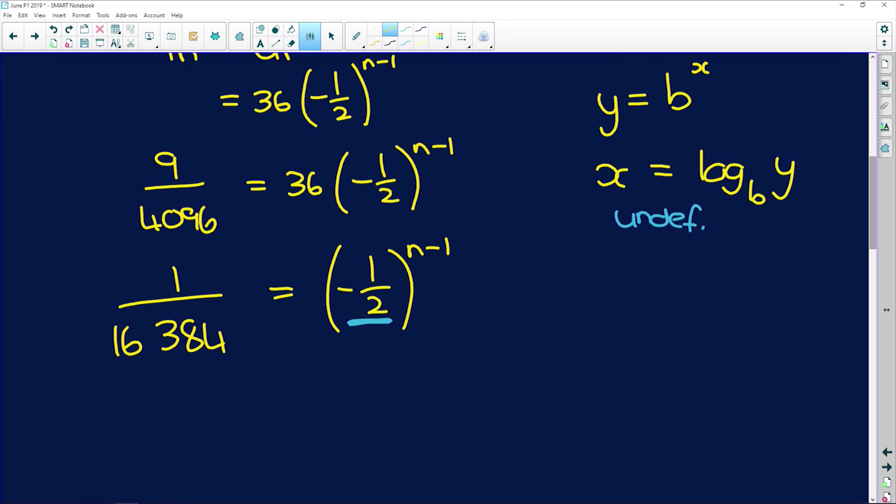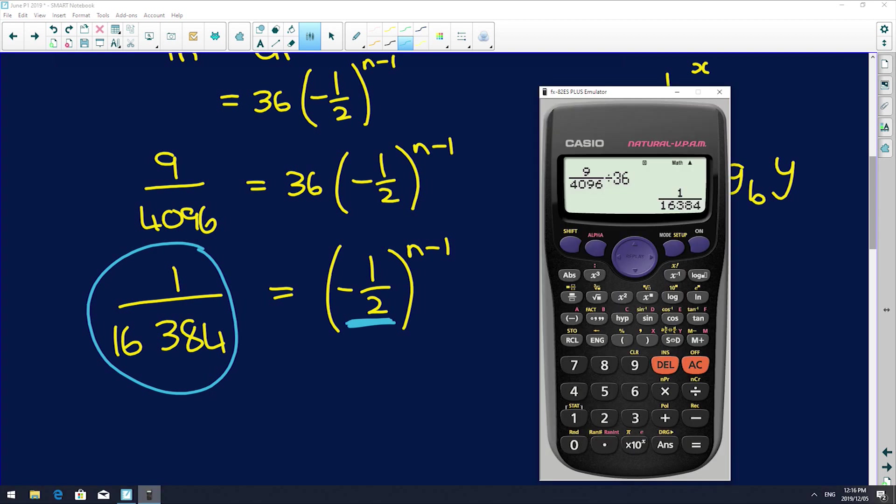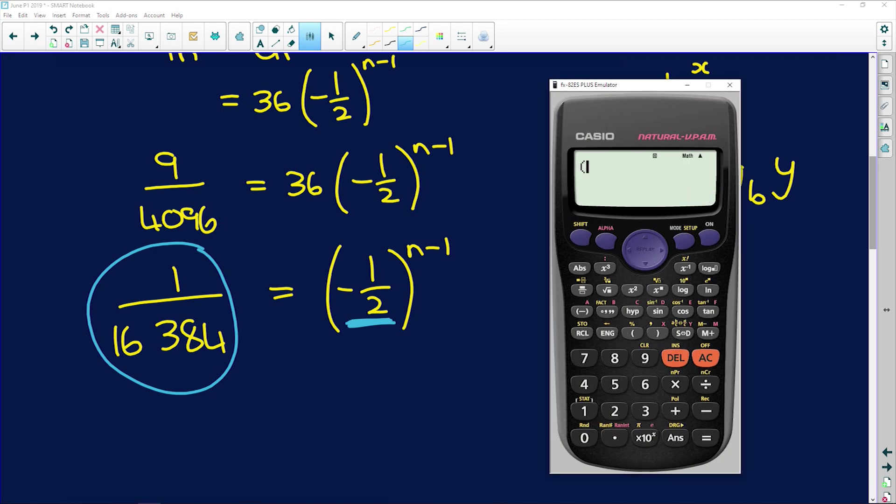So now you need to try and think in terms of your exponent laws. What are the odds of this entire thing on this side being able to be expressed in terms of the base of negative 1 half? So this is where a bit of trial and error comes in. If I say 2 to the power of 5 is 32, then this looks like it could be 2 to the power of, I don't know, maybe somewhere like 12.